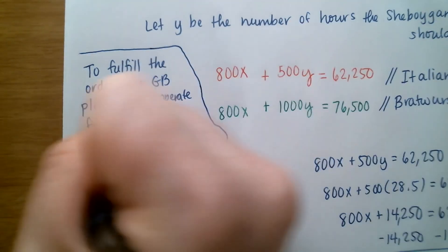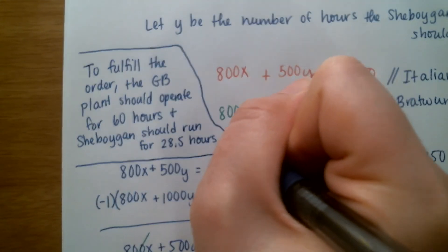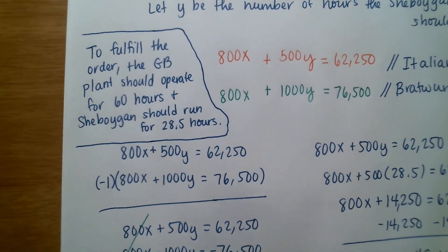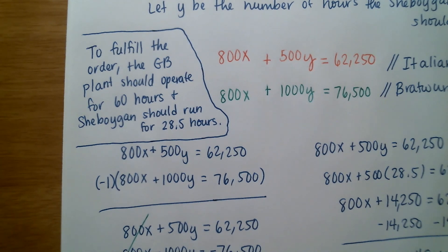You might think 28.5 is a weird answer because of the decimal, and wonder about half an Italian sausage or half a bratwurst — but no. Remember, the variables represent number of hours, not sausages. So 28.5 hours is a perfectly sensible answer. That is how you set this problem up, solve it, and interpret it.